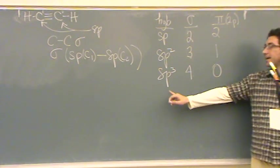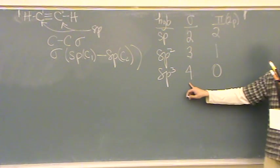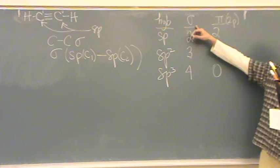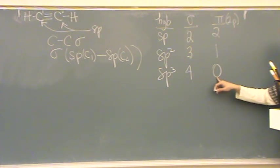For the SP3, there's just four SP3 hybrid orbitals, and those can form four sigma bonds. There's no 2P leftover orbitals, so no pi bonds can form.